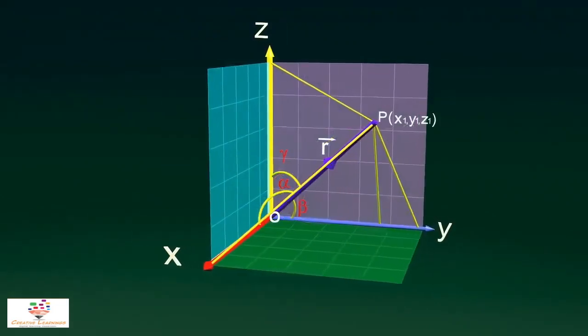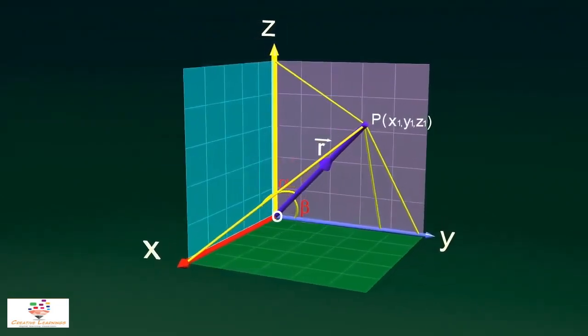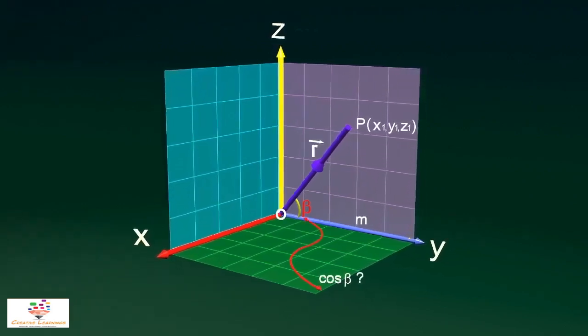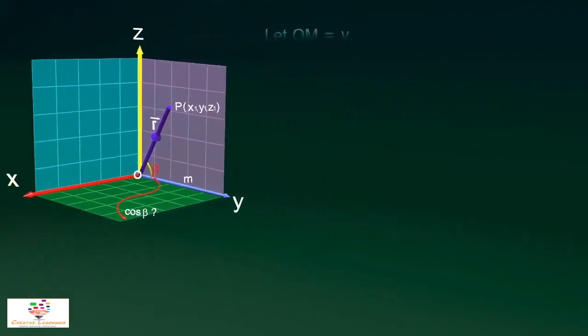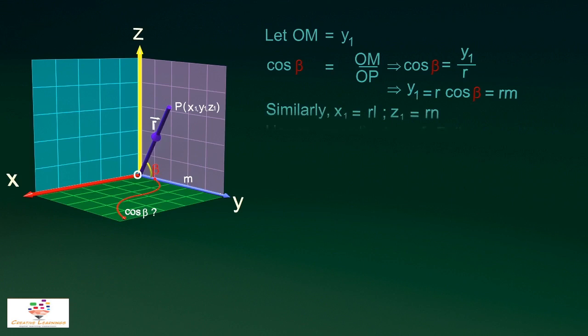Direction cosines are the cosines of the angles between the line and the coordinate axis. Cos alpha, cos beta, cos gamma, denoted by L, M, and N respectively, are direction cosines of OP.